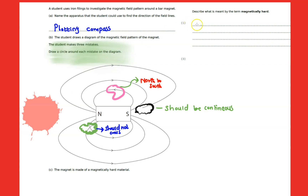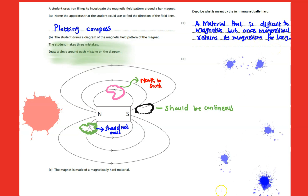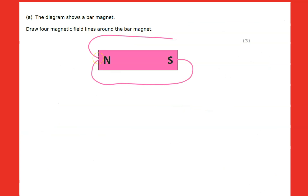The term 'hard magnetic' means the material is difficult to magnetize, but once magnetized it retains its magnetism for a long time — it doesn't easily lose its magnetism.